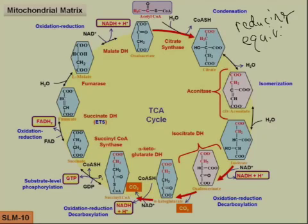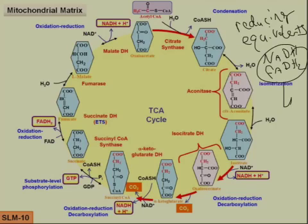Reducing equivalents. And the reducing equivalents are NADH and FADH2, and these provide electrons to the electron transport system.